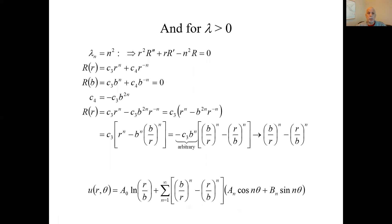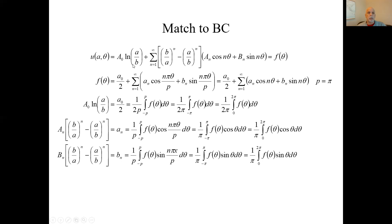Here was the general solution before we match that inner edge. The inner edge is where R equals A. We plug in R for A, here's what you get, and that has to equal that function. It's the explicit boundary condition there. So we expand that F theta in terms of a full Fourier series.